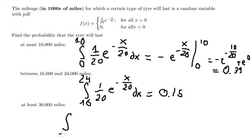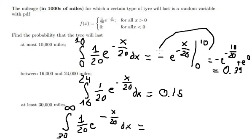For the last one, at least 30,000 miles, we integrate from 30 to positive infinity. Calculating this, we evaluate the limit as x goes to positive infinity.